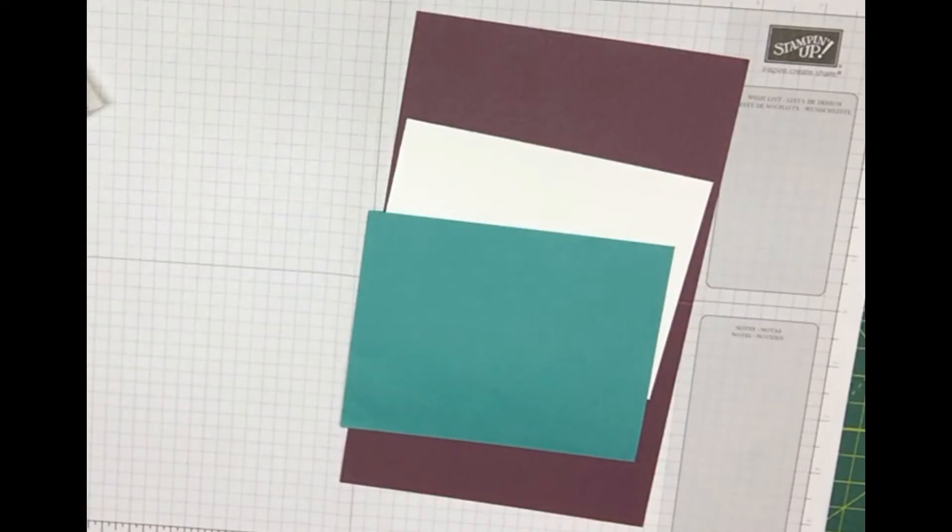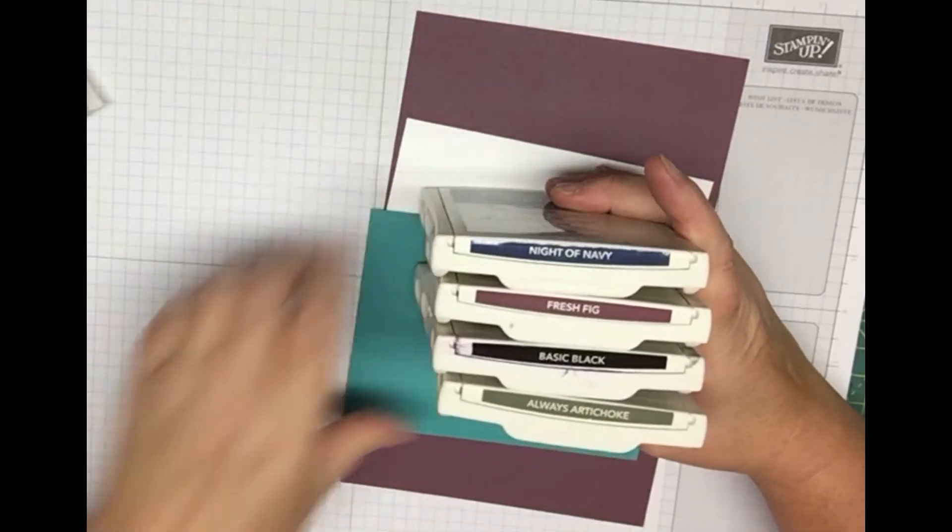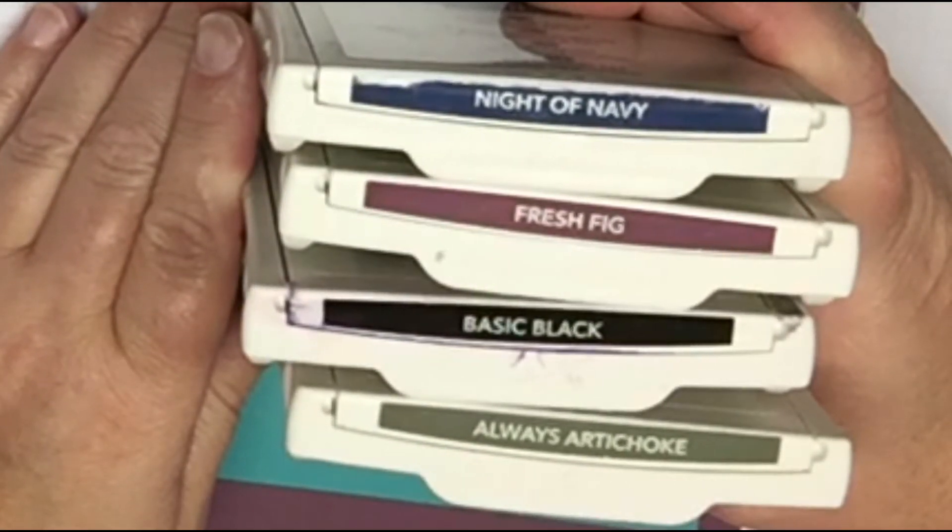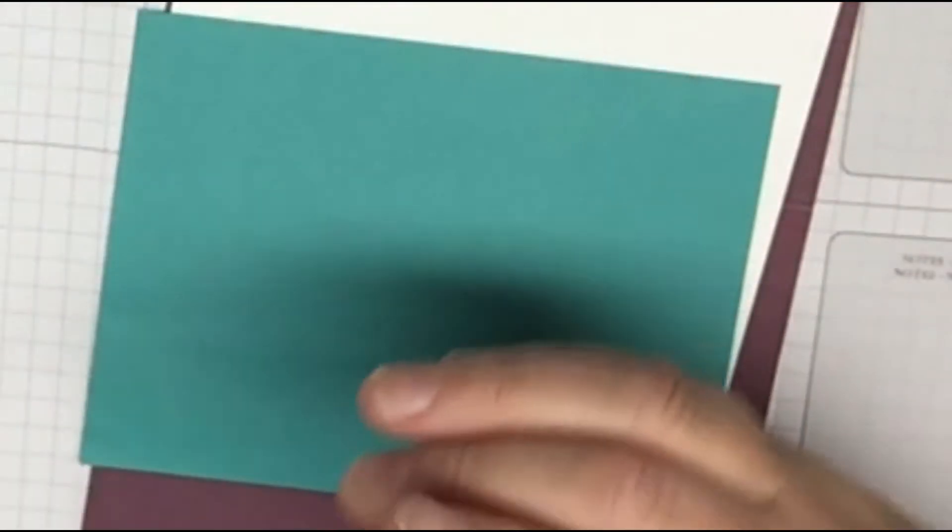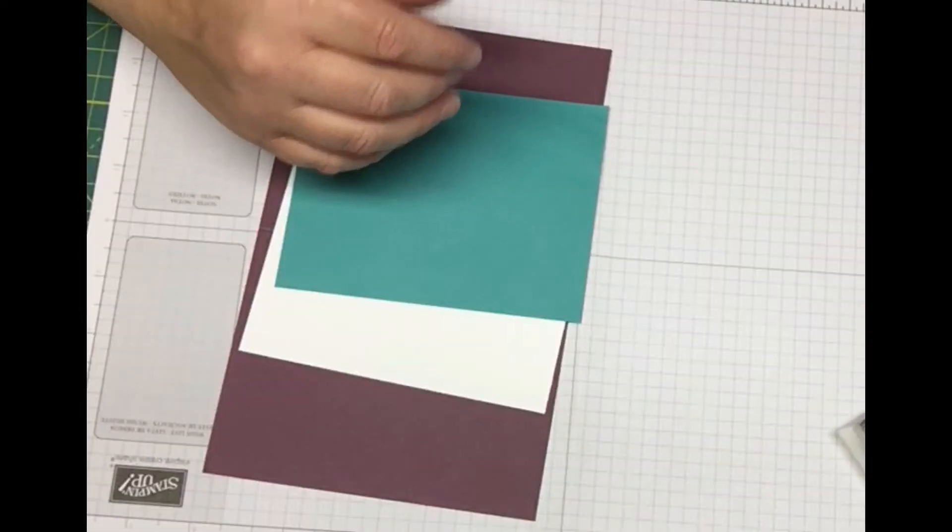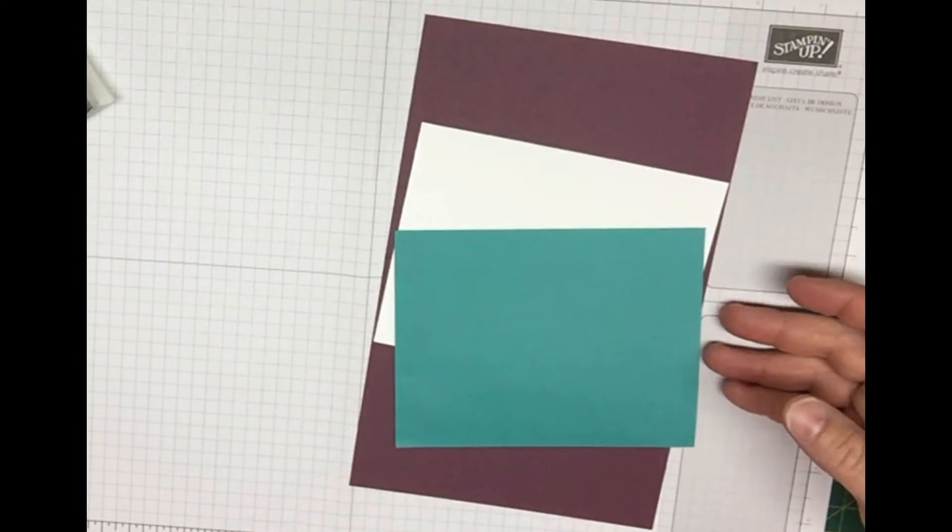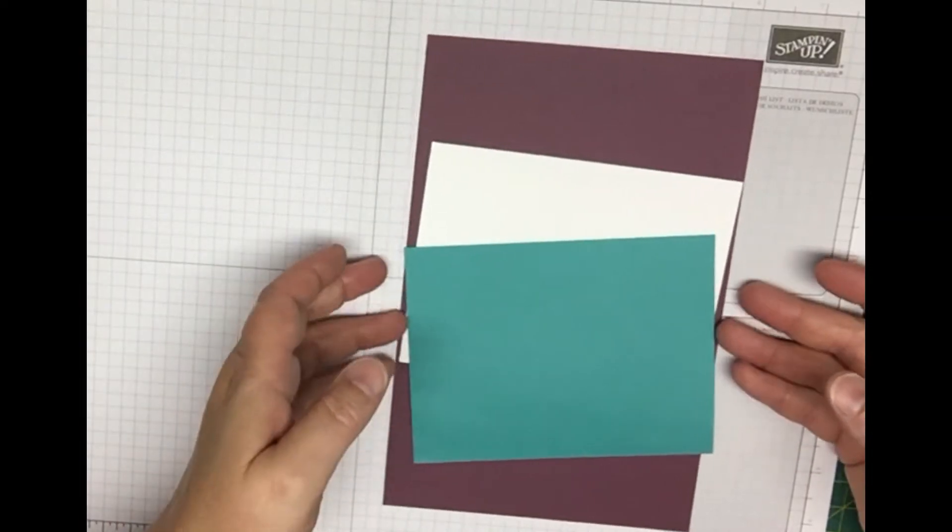You also will need your Big Shot machine, your heating tool, and the ink pads we're using today are Night of Navy, Fresh Fig, Basic Black, Always Artichoke, and you're also going to need your Versamark. So I'm going to go ahead and get started and show you how I made this card.